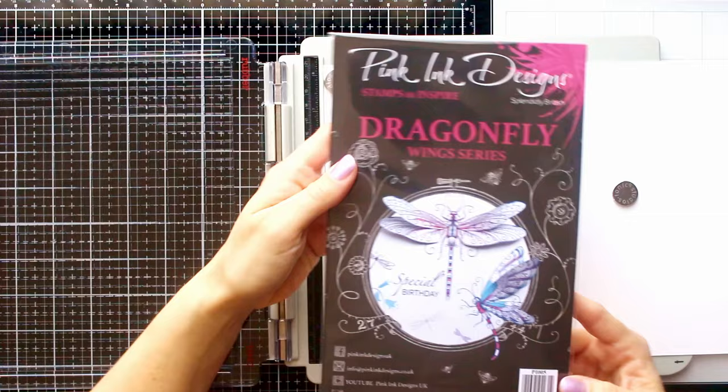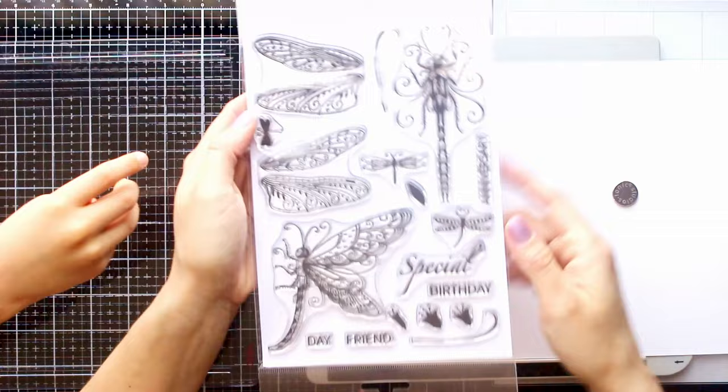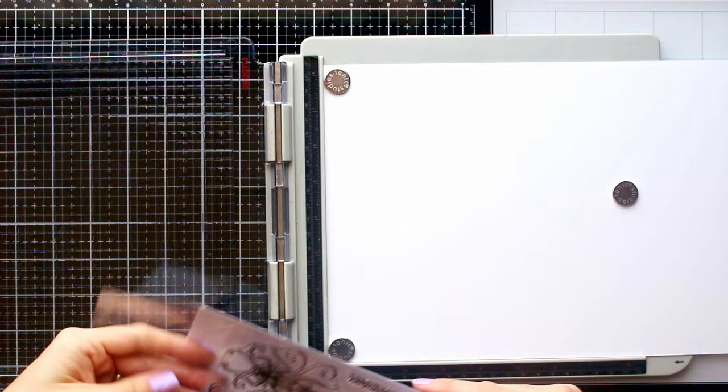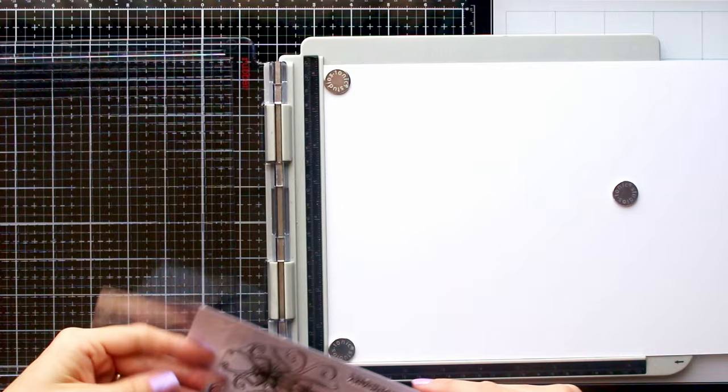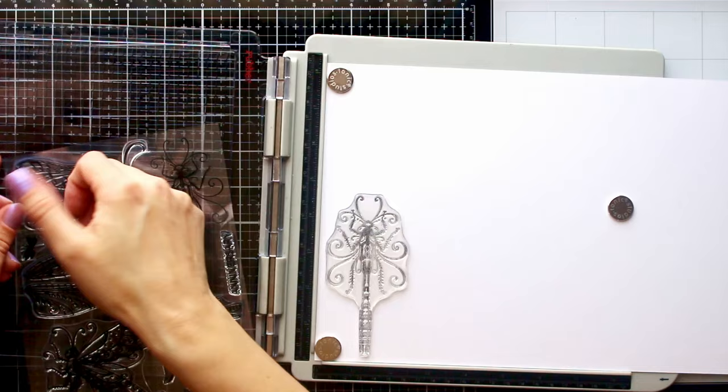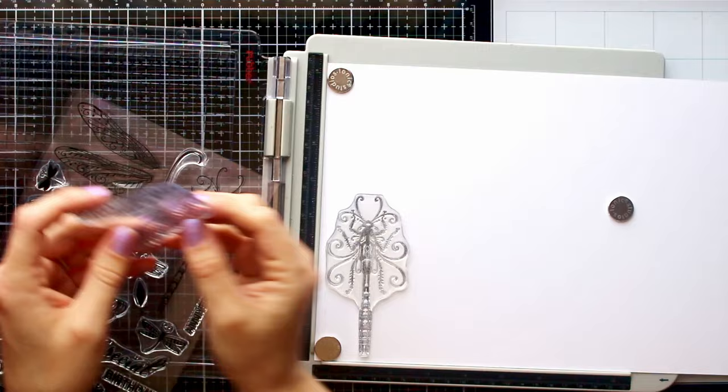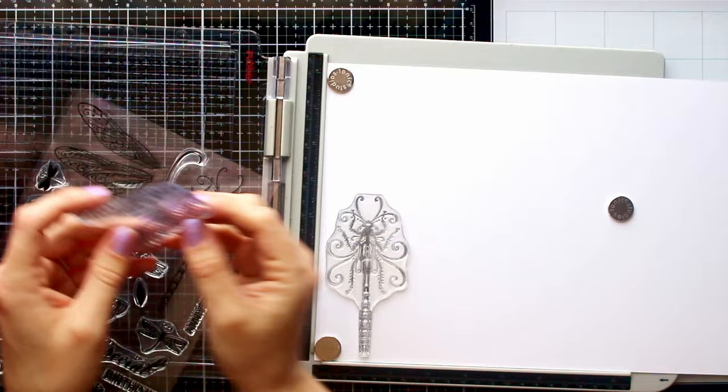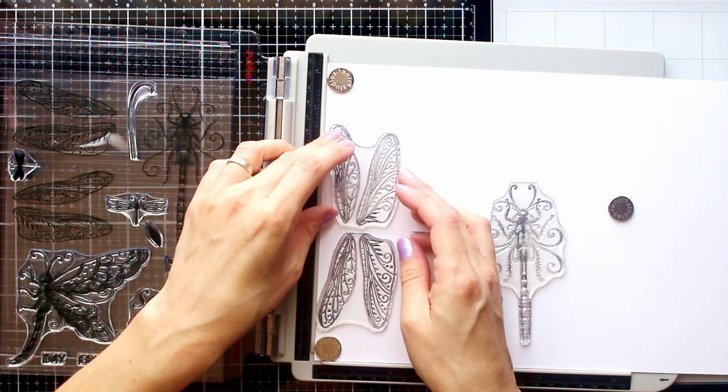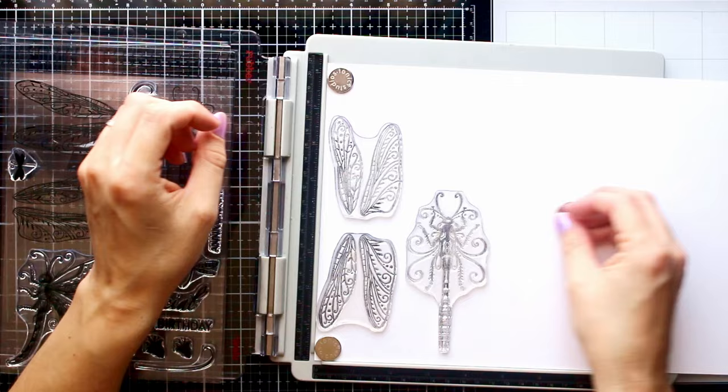The stamp that I will use for this video is from Pink Ink Designs Dragonfly wing series. It's a really beautiful design. As you can see there are two dragonflies, and one of them has separate stamps for the bodice of the dragonfly and for its wings. And that is the one which I am going to use. For stamping I will use a stamping platform and Versafine ink pad in Onyx black color. There are two stamps for the wings, one for the left and one for the right side. And I will stamp each of them twice, as I wanted to create some more dimension in the wing department.